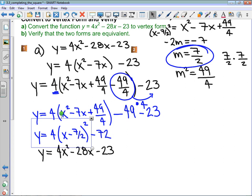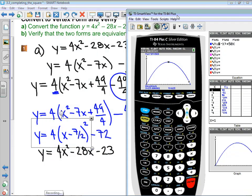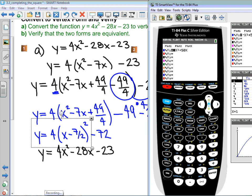But, we could expand what I have in blue to make sure that we get the black function, but I do want to show you the advantage of the graphing calculator, which to make sure that I've done this correctly, and for y1, I'm going to put my factor form, so 4 times x minus 7 halves, which you close that bracket and square it, minus 72. And then for y2, I'm going to have 4x squared minus 28x minus 23.